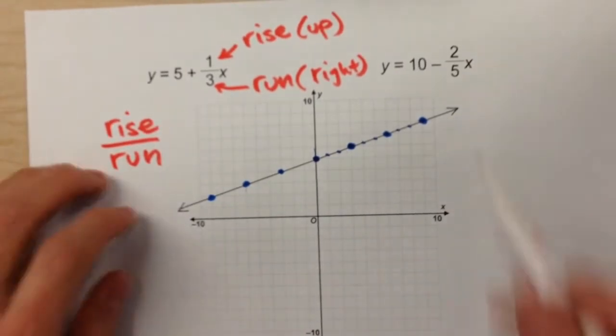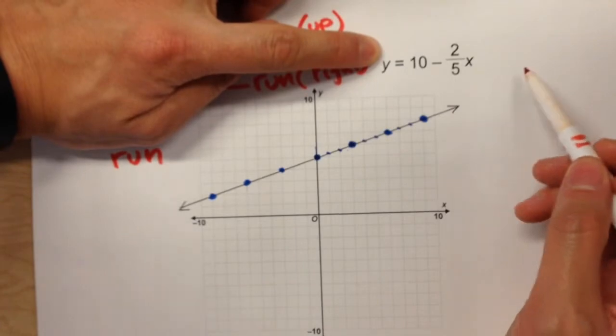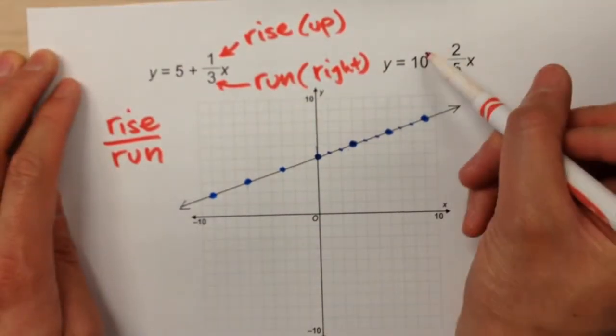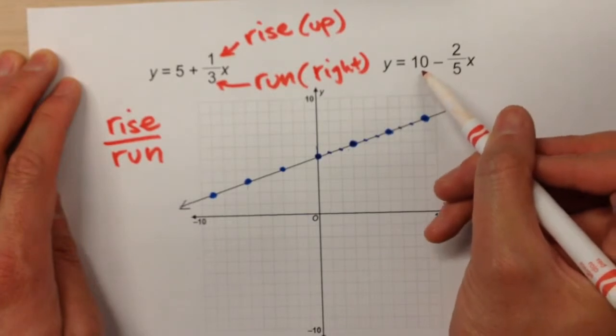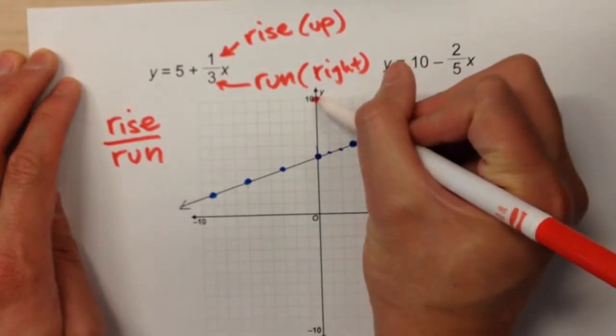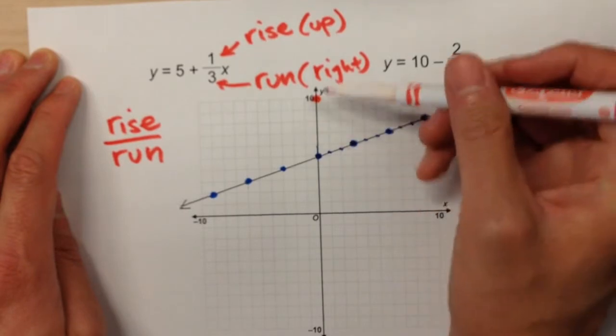Let's do one more example. Y equals 10 minus two-fifths x. So again, start with your y-intercept, your starting point. In this case, it's 10 because that's the number that doesn't have an x next to it. So I'm going to plot 10 on the y-axis.